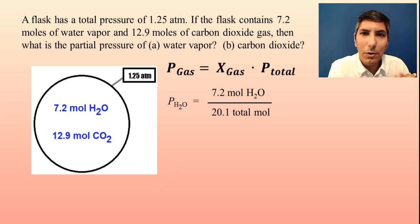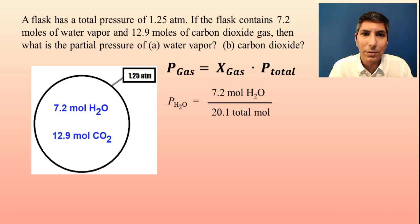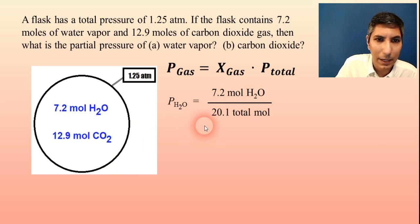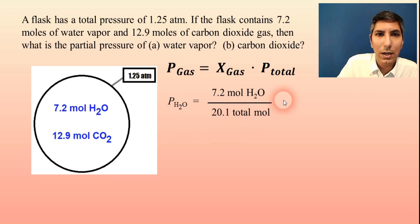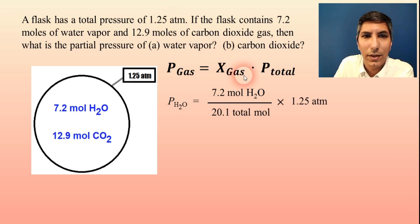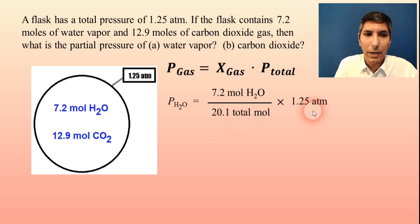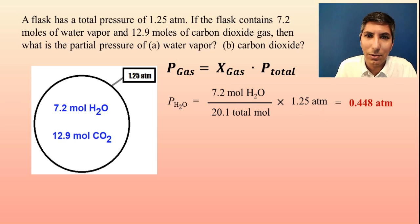It's like in the other example with the X's and the triangles — we had 7 X's and 3 triangles, and we divided by the total of 10. Same thing here. So we divide 7.2 by 20.1, then multiply by the total pressure of 1.25 atmospheres. When you divide the fraction 7.2 divided by 20.1 and then multiply by 1.25 atmospheres, the answer you should get on your calculator is about 0.448 atmospheres.